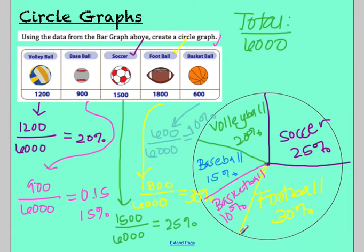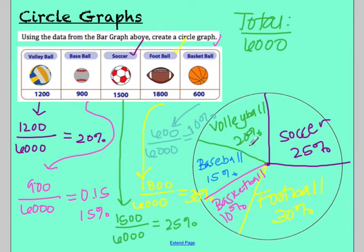There's my circle graph. Hopefully you used a straight edge. You can check it visually: 30% is bigger than 25%, which is bigger than 20%, which is bigger than 15%, and 15% is bigger than 10%. Overall, it looks right.